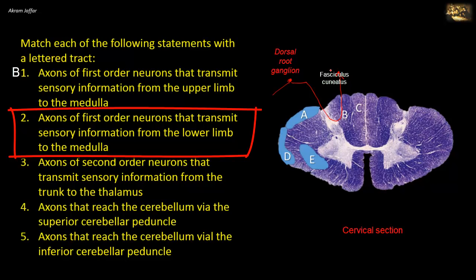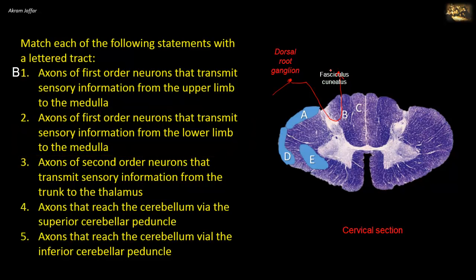For statement 2: axons of first order neurons that transmit sensory information from the lower limb to the medulla. The same logic applies, but the lowest level fibers of segmental innervation are represented in the most medial part of the posterior funiculus — that is, in C, the fasciculus gracilis — whose fibers synapse in the nucleus gracilis in the medulla. Now E is the spinothalamic tract. This tract also transmits sensory information, but of touch, pain, and temperature, and the fibers here are second order neurons, not first order neurons.